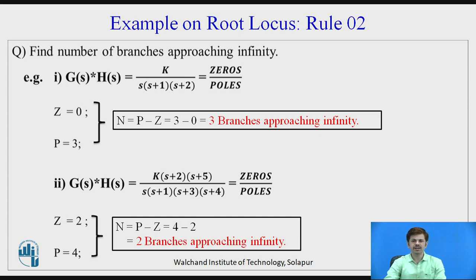In the second case, the open loop transfer function is K(s+2)(s+5) divided by s(s+1)(s+3)(s+4). The number of zeros is 2 and the number of poles is 4. So N = 4 minus 2 = 2, which implies two branches are going to approach infinity.